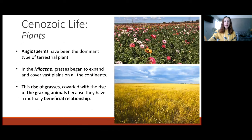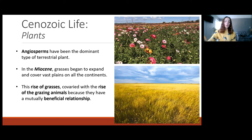Moving on to plants, we have angiosperms or flowering plants — which we talked about last time in the Mesozoic video evolving in the Cretaceous — going on in the Cenozoic to become the dominant type of terrestrial plant. Along with that, they did a lot to contribute to the evolution of pollinating insects. Then in the Miocene, grasses began to expand and cover vast plains of all continents, and the rising grasses co-varied with the rising grazing animals because they have a mutually beneficial relationship.